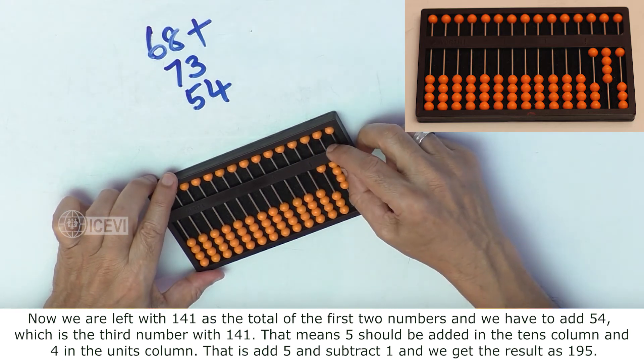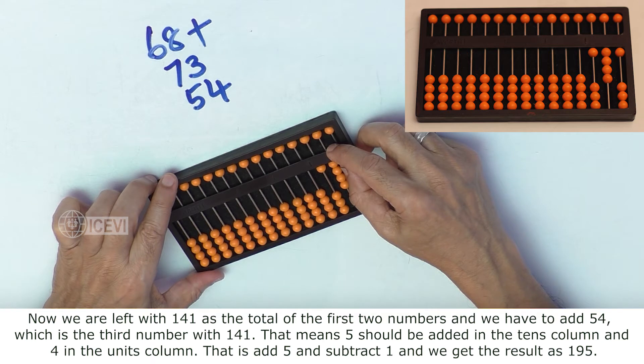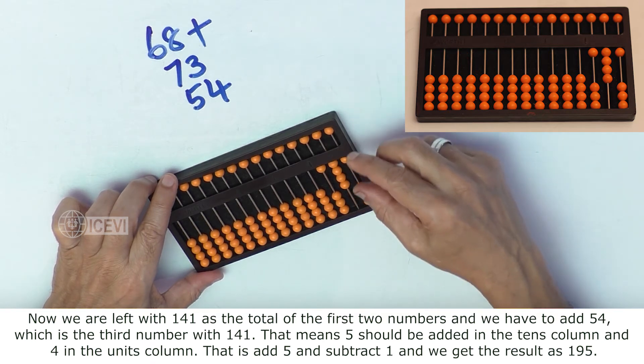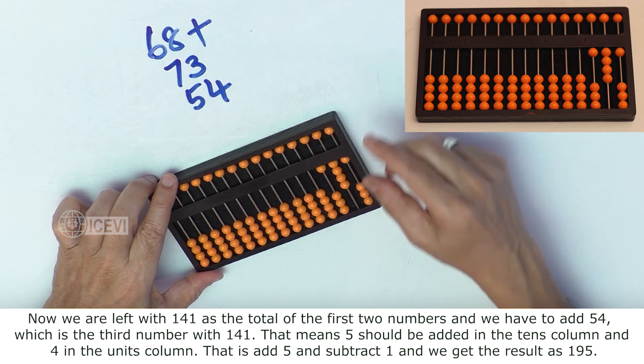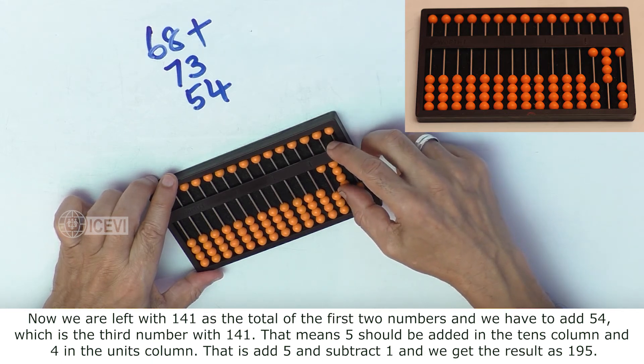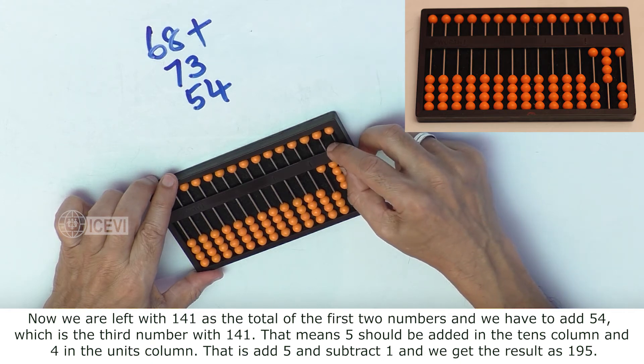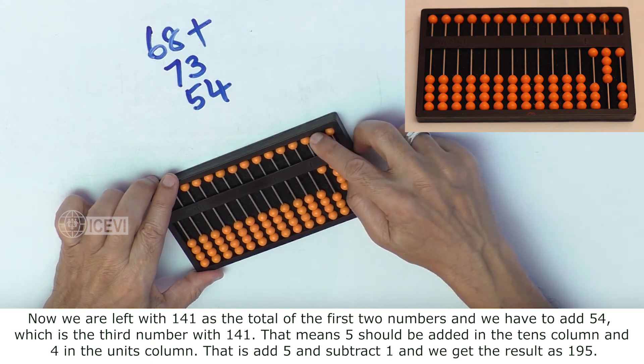Now we are left with 141 as the total of the first two numbers, and we have to add 54, which is the third number. That means 5 should be added in the tens column and 4 in the units column.